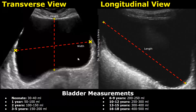Here are some general measurements of the bladder volume across different age groups. These are estimated values. In a neonate, the full bladder volume can be between 30 to 40 milliliters. In a one-year-old, it can be between 50 to 100 milliliters. As you can see, this range gradually increases as the child grows.